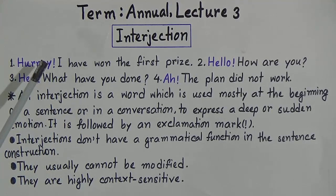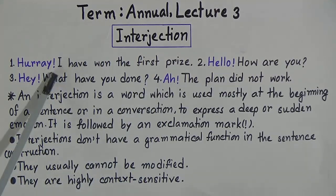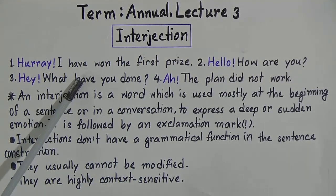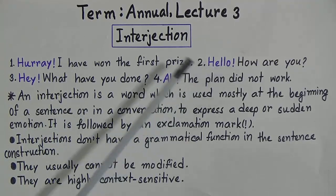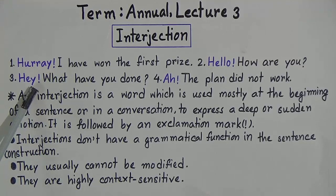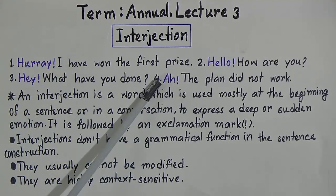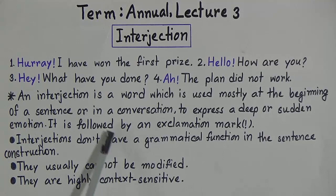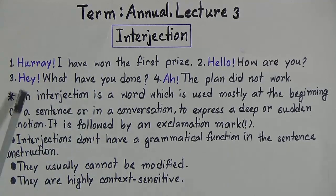The words hooray, hello, hey, and ah are interjections because they show our strong emotions. Hooray expresses the emotion of happiness. We use hello to greet someone. We use hey to show our strong feeling of surprise. We use ah to show our sadness. So these words are called interjections. Interjections are the words which are used to express our strong feelings.